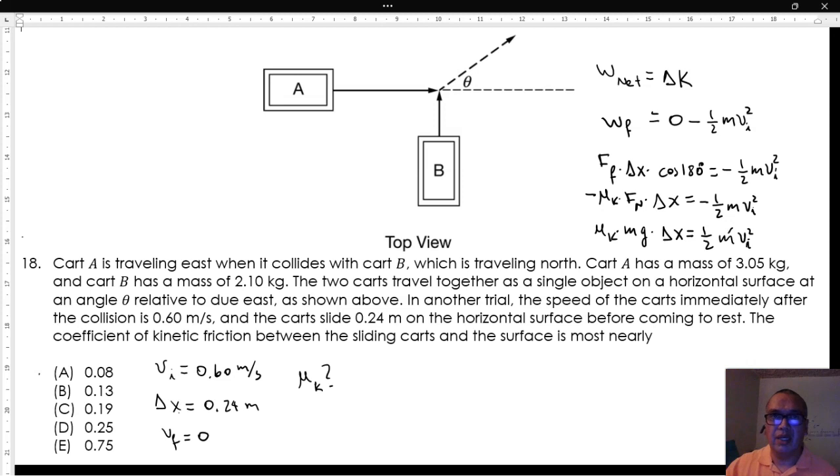The masses cancel out. And the coefficient of kinetic friction is equal to the initial speed squared over 2 times gravitational acceleration times displacement.